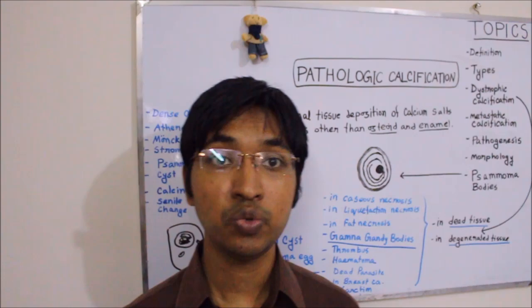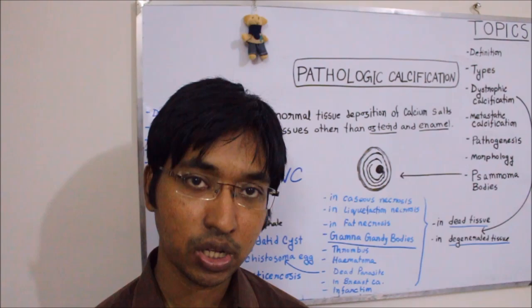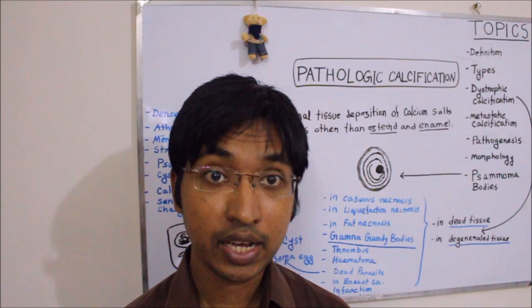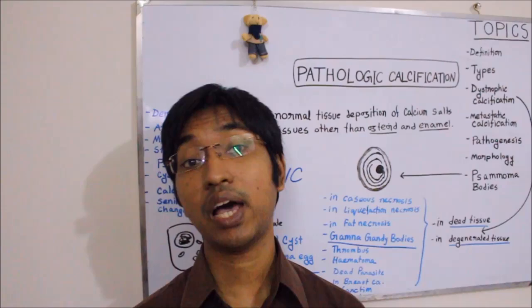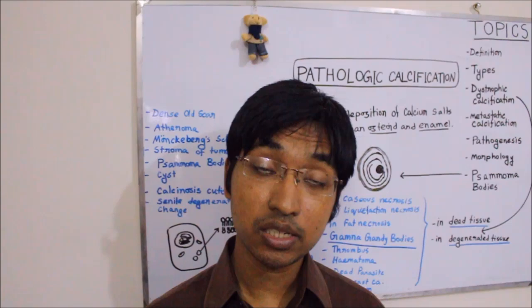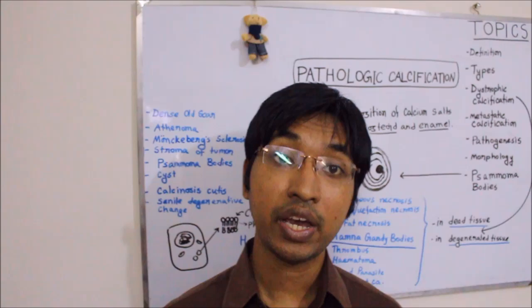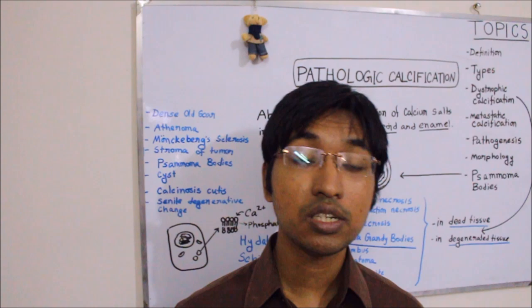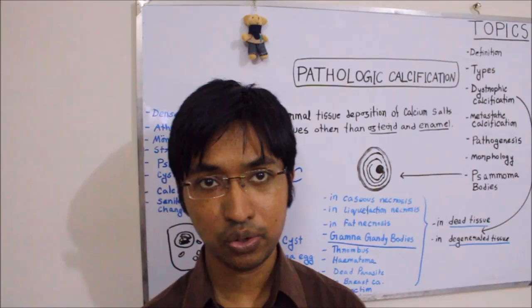Always remember the calcification seen in metastatic calcification will be morphologically similar. Dystrophic calcification occurs in dead and dying tissue and is a telltale sign of cell injury. On the contrary, metastatic calcification occurs in normal and living tissue. Although it can happen in any living tissue, metastatic calcification commonly involves the interstitial cells of the gastric mucosa. It can also happen in the kidney, systemic arteries, pulmonary veins, and lungs.